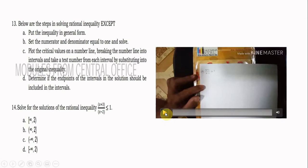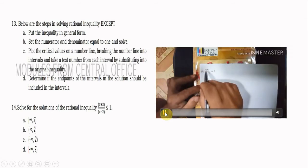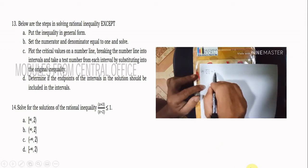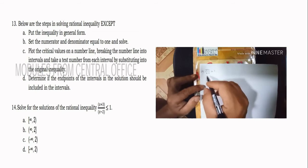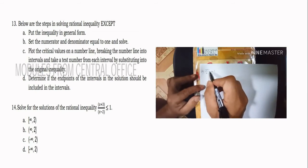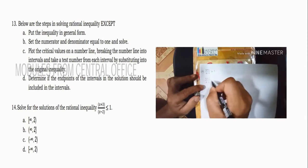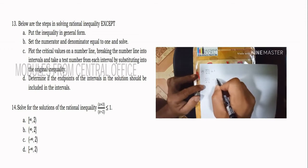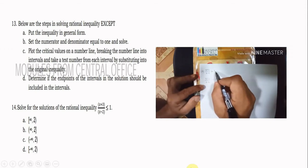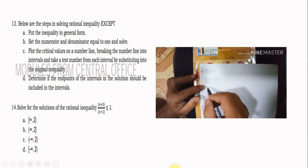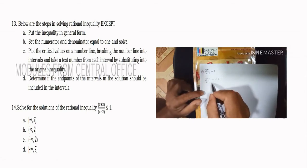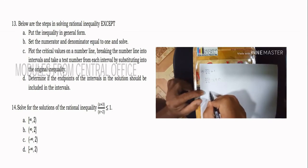Number 14: Solve the rational inequality x+3 over x−2 is less than or equal to 1. To solve this, change it into general form by transposing 1 to the left side: x+3 over x−2 minus 1 is less than or equal to 0.